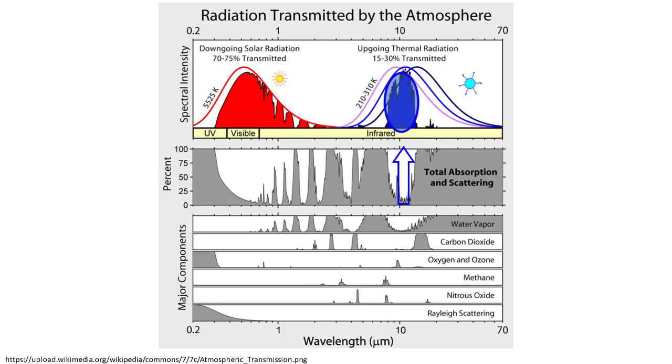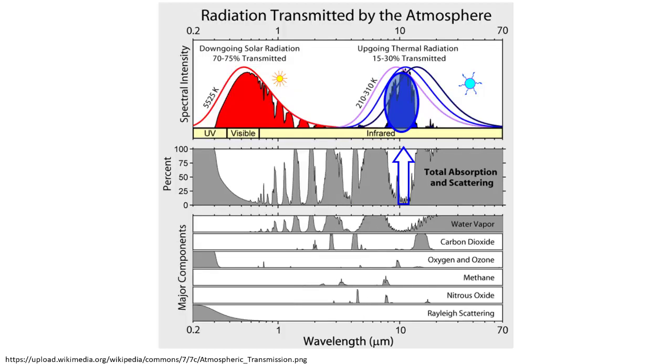But there's a window in the middle where a whole bunch of wavelengths just pass unimpeded back out to space. We call that the atmospheric window, and all of that energy is lost back to space.